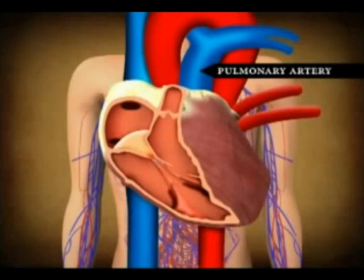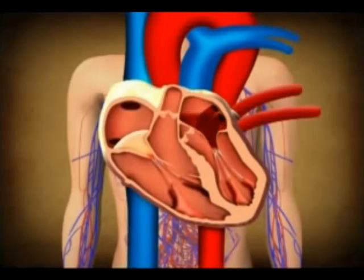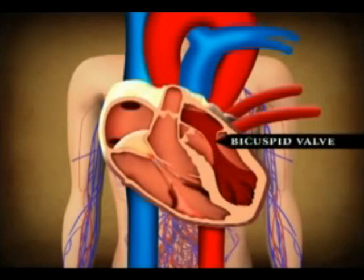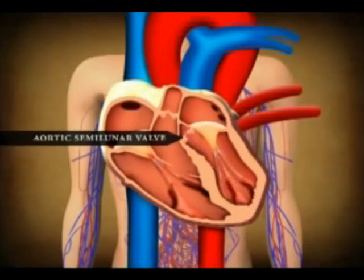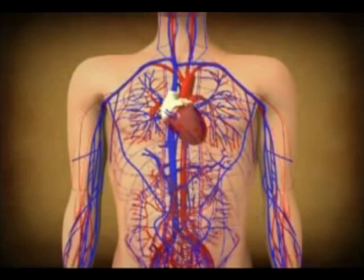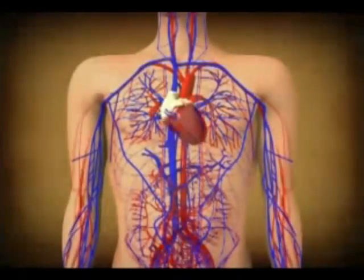The oxygenated blood returns through the pulmonary vein to the left auricle. The left auricle fills with blood, contracts, and forces blood through the bicuspid valve into the left ventricle. The left ventricle contracts, the semilunar valve in the aorta opens, and blood flows to the tissues through the aorta. Note that both left and right auricles relax and contract at the same time. Similarly, the right and left ventricles relax and contract together. When the auricles relax, the ventricles contract, and vice versa.